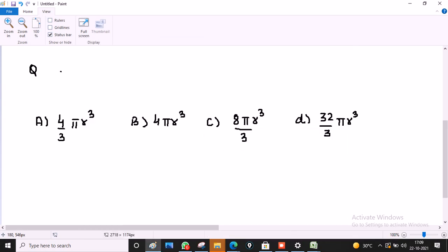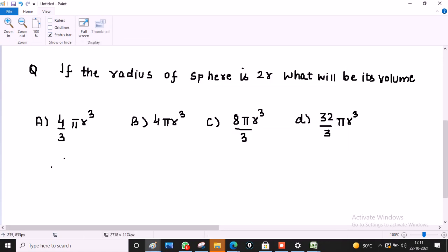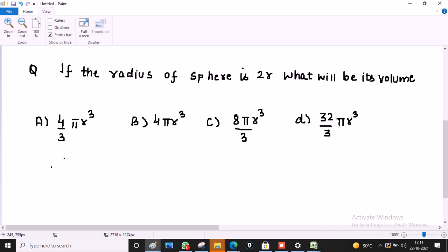If the radius of sphere is 2R, what will be its volume? So in this question, radius of sphere, let it be big R, is 2R. Then what is the volume of sphere?